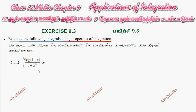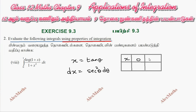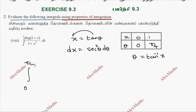Let x equal to tan θ. So the original limit: when x equals 0, θ equals 0, and when x equals 1, θ equals π/4. Now let's look at the new limits.